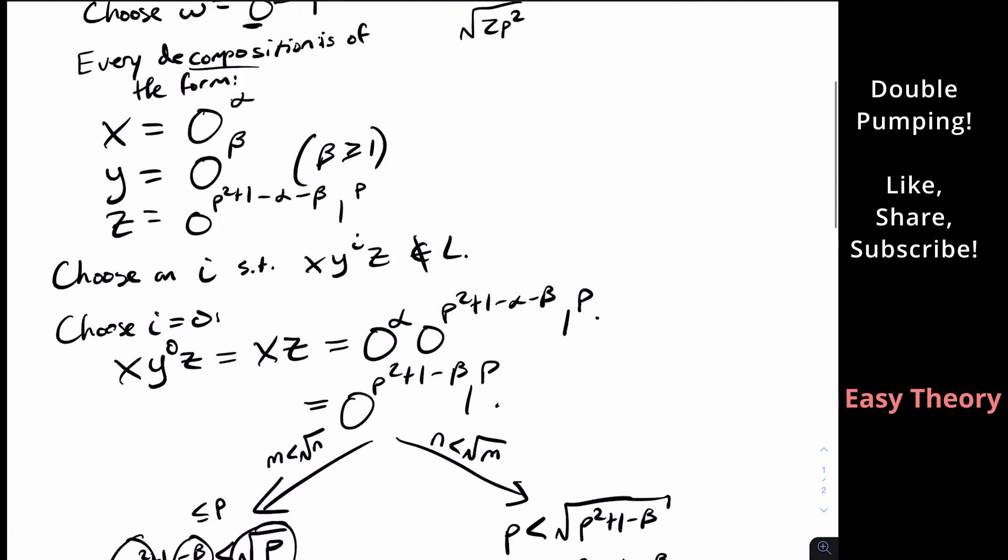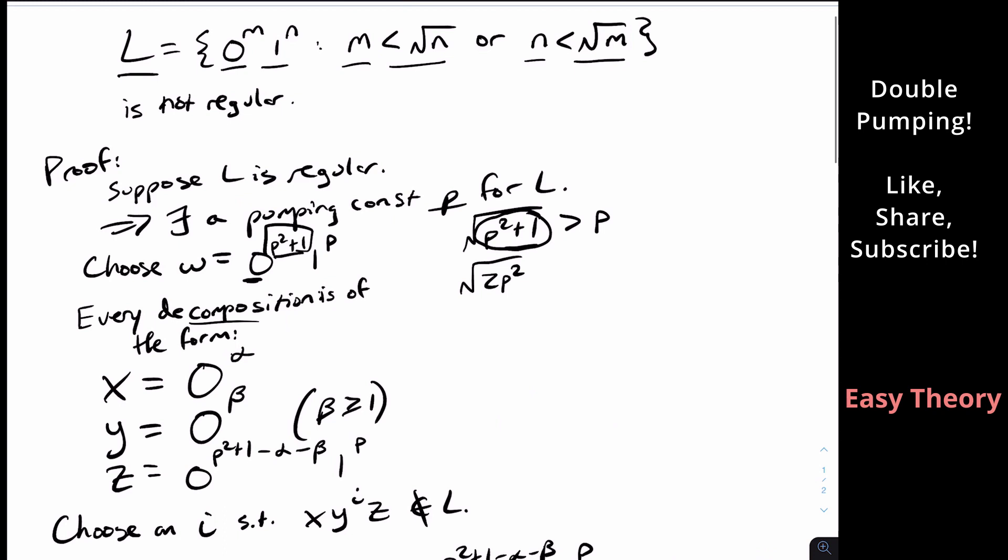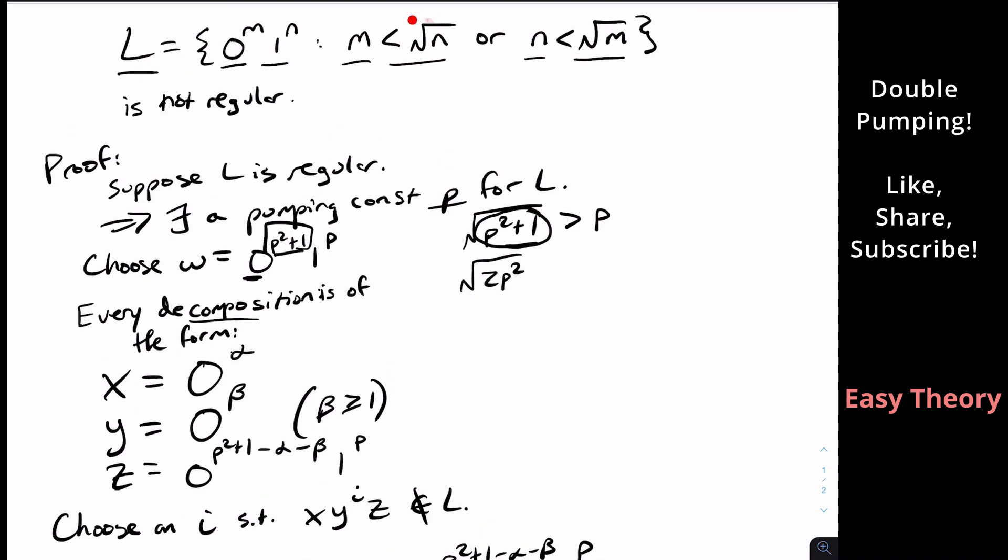So the thing to take note from this is that whenever you have a pumping lemma style question, and you have two different conditions you have to meet, you have to be able to show that both conditions are false to be able to leave the language. What students sometimes do is they only show one and not the other one.